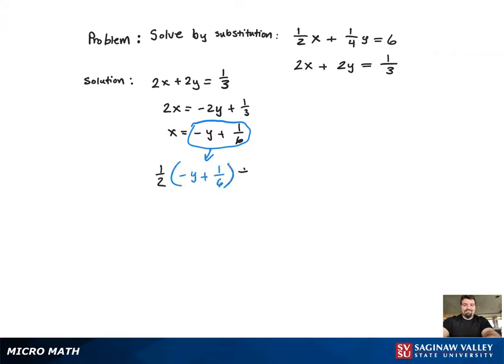Now it's just an equation with one variable y. So all we have to do is just combine the like terms and then get the constants to one side, variables to the other, and solve for y.